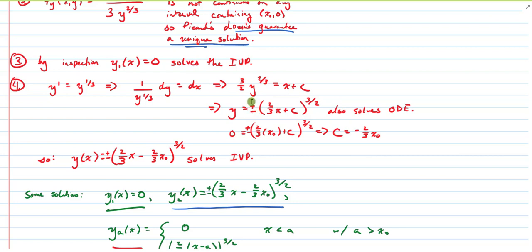Notice the presence of that plus or minus. And then I went ahead and plugged in my initial condition and found that the c value would be minus two-thirds x not. And that gives us another solution, or actually another pair of solutions, to the IVP.